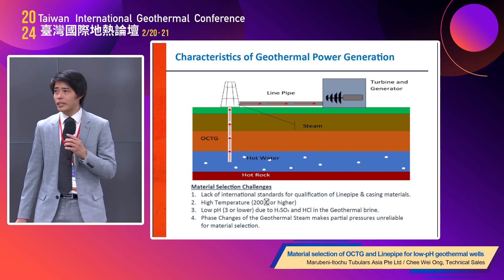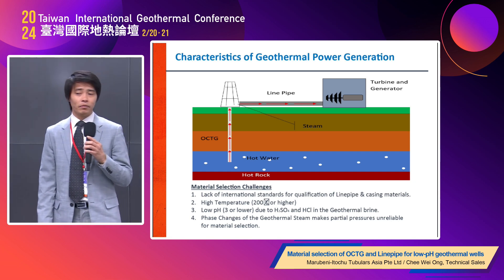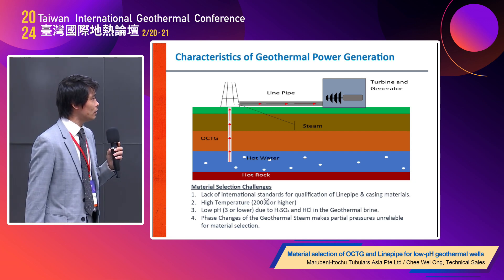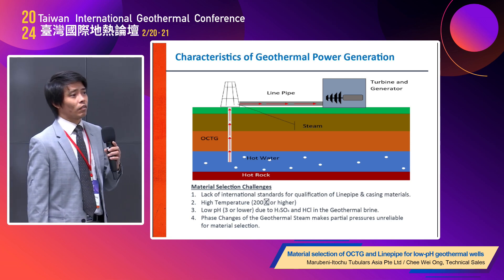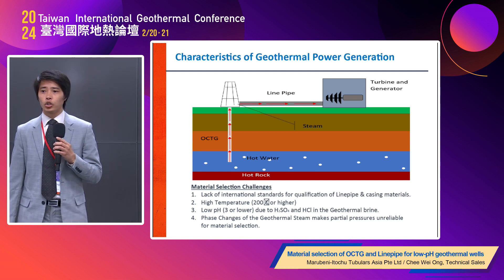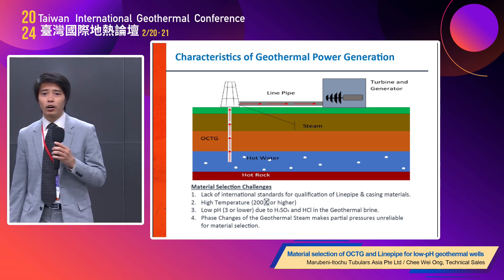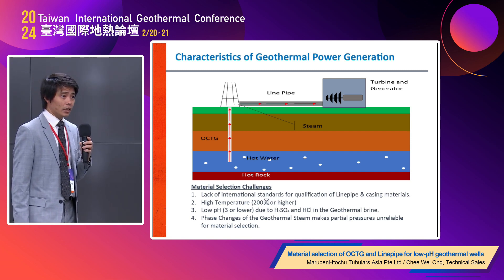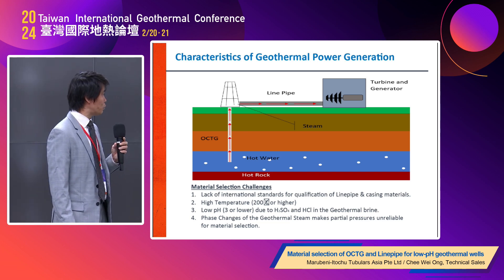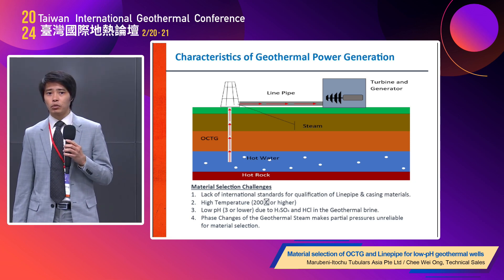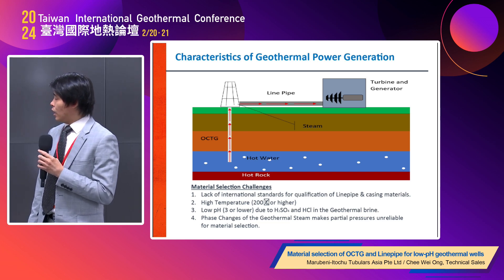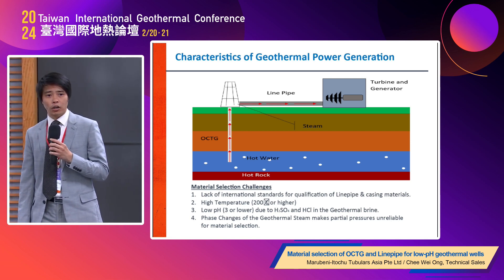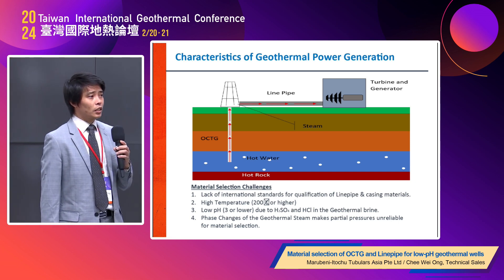Here is a schematic about geothermal power generation in a simplified model for understanding. In material selection, we have found challenges due to a lack of international standards for qualification of line pipe and casing materials — there is no focus specifically for geothermal application. By and large it depends on oil and gas, which has far more experience in exploration and production, and we leverage that. For geothermal, the application is exposed to high temperatures — 200°C and above, some even reaching 350 or 500°C — and the pH is also low, as low as 3 or below.